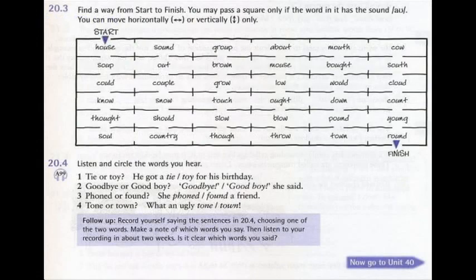99 A. 1. Tie or toy? He got a toy for his birthday. 2. Goodbye or good boy? Good boy, she said.